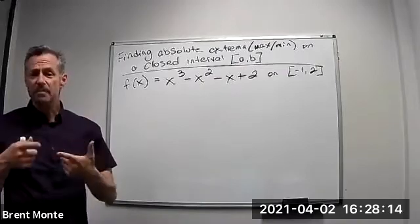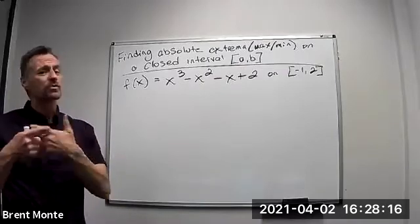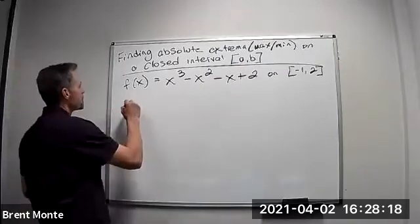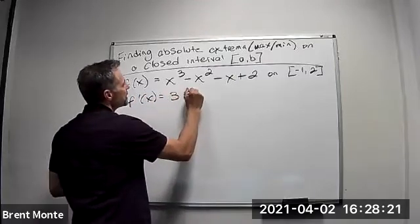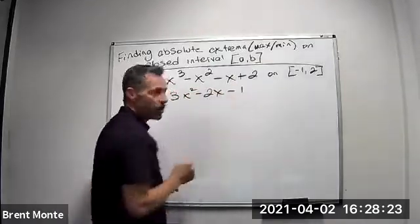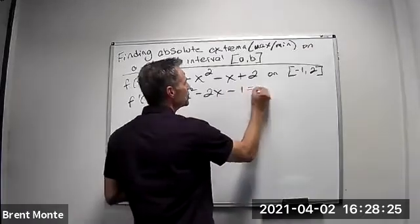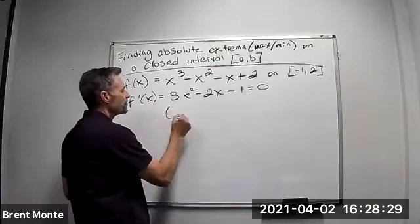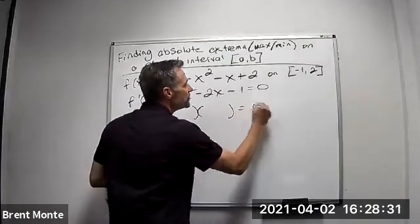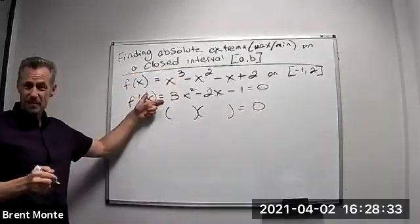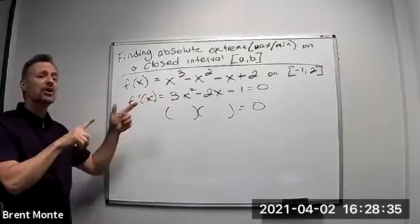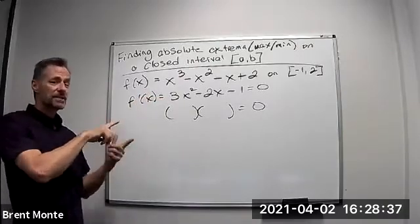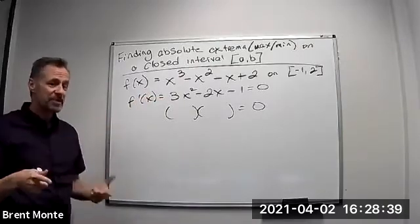Now we do what we typically do, we take the derivative, set it equal to zero and solve to find critical values. If I take the derivative, 3x squared minus 2x minus one, I set it equal to zero, this is a little harder to solve. It factors, if you don't remember how to factor this type, I've got another video that talks about factoring these trinomials using the illegal move method, you may want to check out, it works real nice.